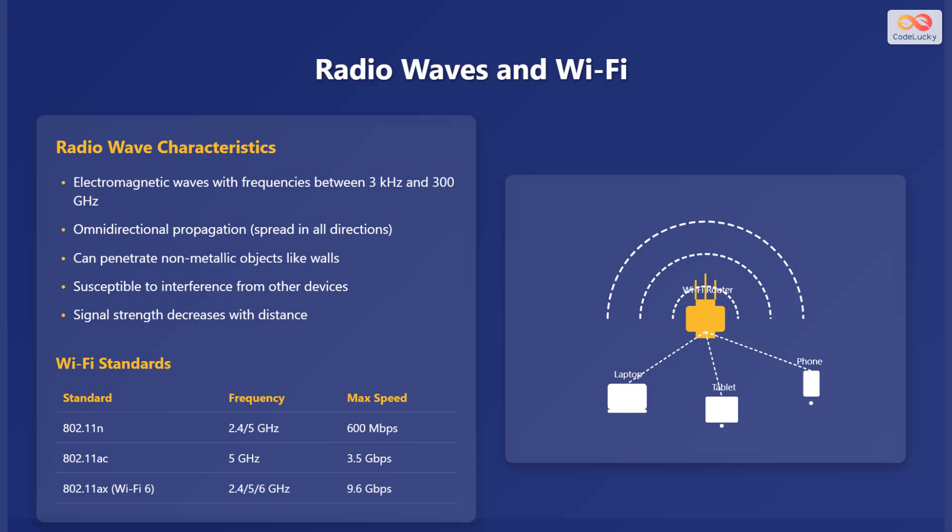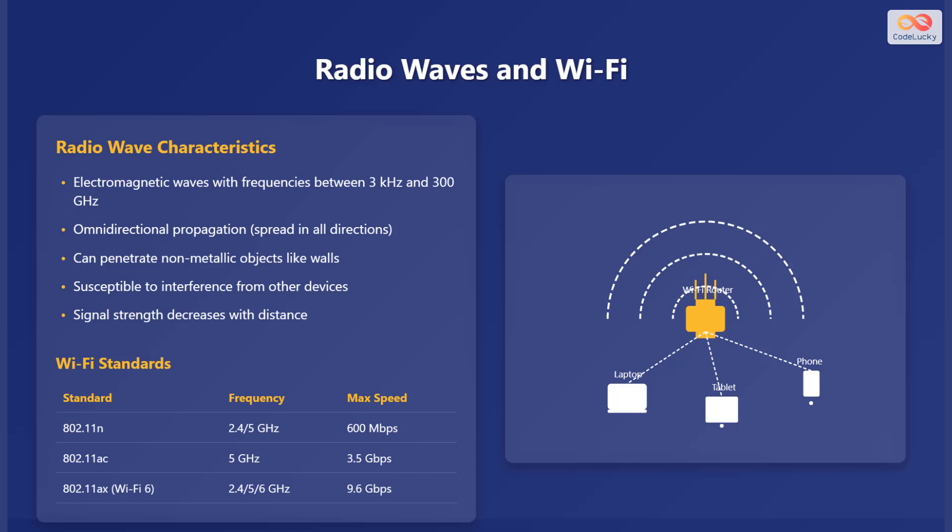Let's take a closer look at radio waves and their application in Wi-Fi networks. Radio waves are electromagnetic waves with frequencies ranging from 3 kilohertz to 300 gigahertz. They exhibit omnidirectional propagation, spreading in all directions, and can penetrate non-metallic objects like walls. However, radio waves are susceptible to interference from other devices and their signal strength decreases with distance. Wi-Fi, a popular wireless technology, utilizes radio waves to enable wireless communication between devices and networks. Various Wi-Fi standards such as 802.11n, 802.11ac, and 802.11ax, also known as Wi-Fi 6, operate at different frequencies and offer varying maximum speeds.